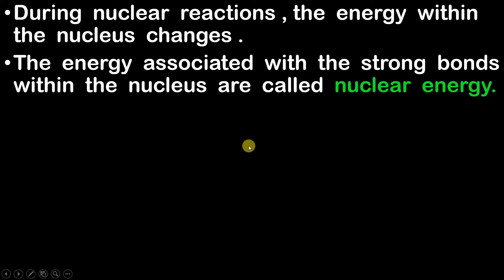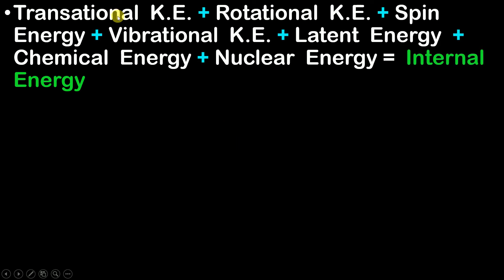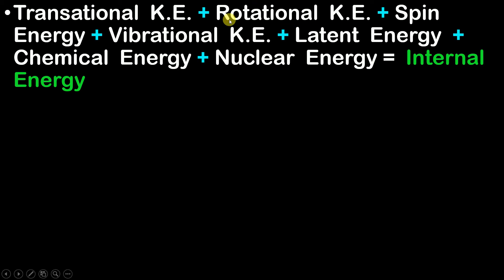When you add all these microscopic forms of energy — translational kinetic energy, rotational kinetic energy, spin energy, vibrational energy, latent energy, chemical energy, and nuclear energy — you get what is called internal energy. In thermodynamics, you cannot calculate each of these small microscopic forms individually, so they are all clubbed together and given the single name: internal energy.